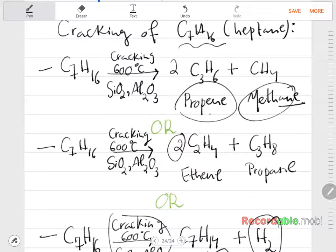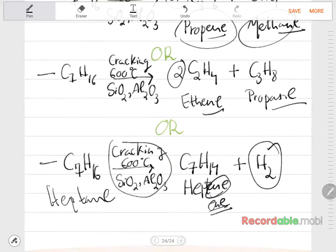Also another way is that you can split it to propene and methane. So this is an alkane and this is an alkene, and this is also an alkene and this is an alkane. But again you need to balance because here you have seven, so two times three is six and the one here, so it's seven.